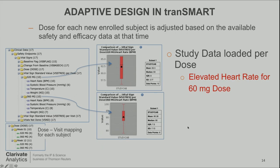For adaptive design, what you can do is consider loading your subjects per dose — then you don't really care about the visit for safety purposes. Or you can load them both ways, depending on what kind of information you're trying to get. If you load them by drug dose and look at subjects that received 20 milligrams versus 60 milligrams, you might see that 60 milligrams leads to elevation in heart rate — which could be alarming.